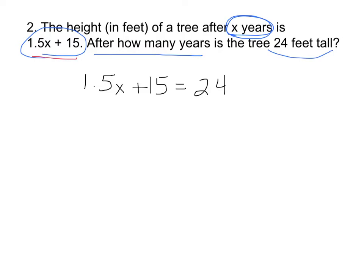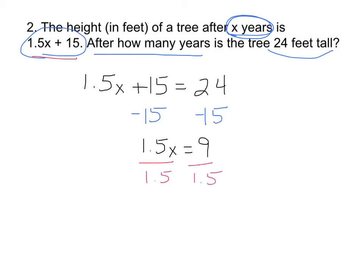Let's solve this. To get rid of plus 15, subtract 15 on both sides. That leaves us with 1.5x equals 9. Next step: the opposite of multiplying by 1.5 is dividing by 1.5.